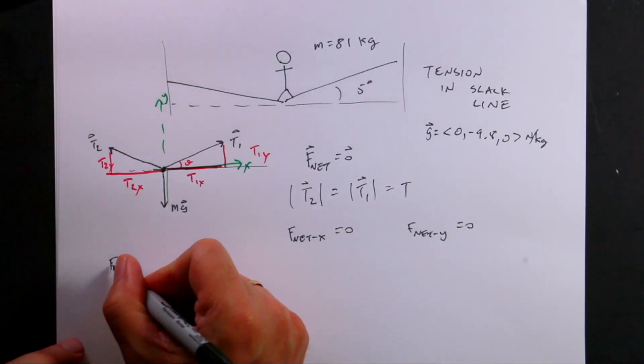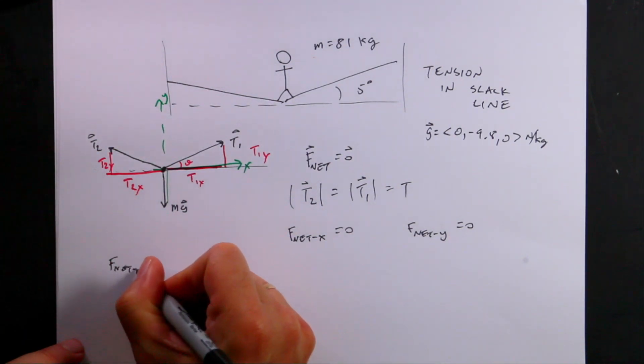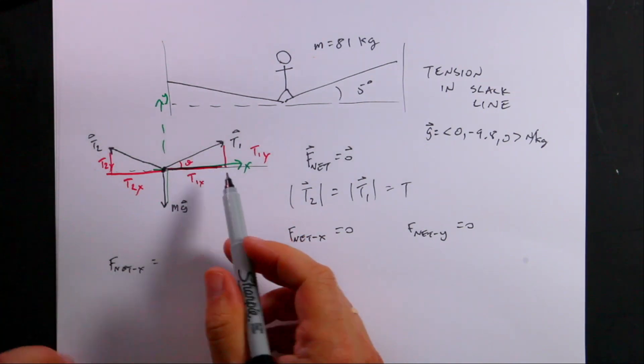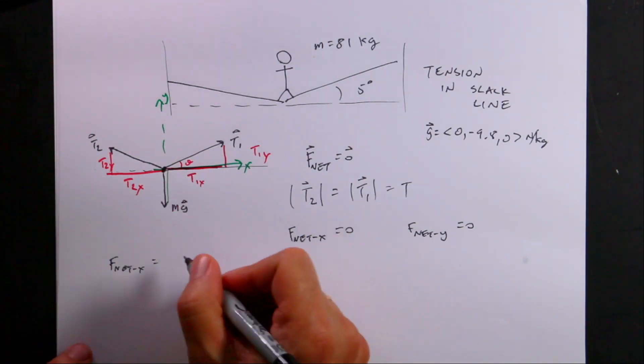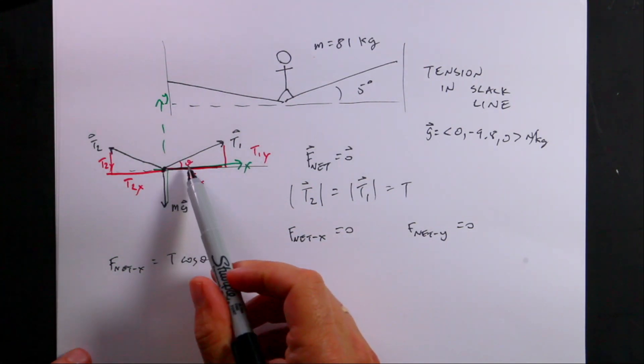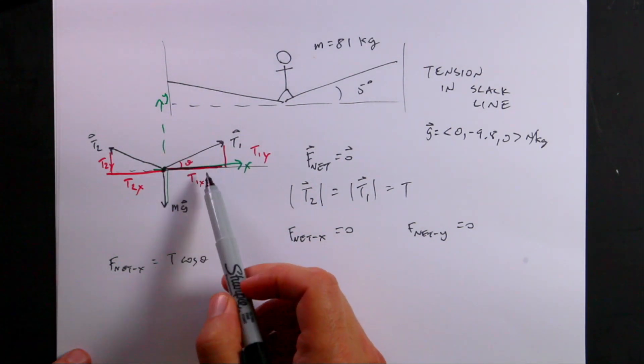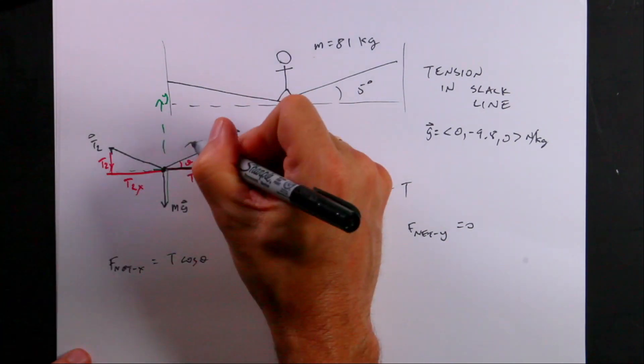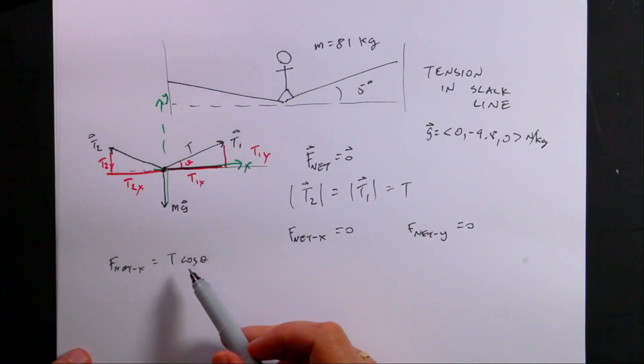if I say f net x, it's going to be equal to the x component of T1, which is going to be T cosine theta. Because cosine theta is T1x over t. Remember that whole side is t. And then if I solve for Tx, I get T1x, I get T cosine theta.